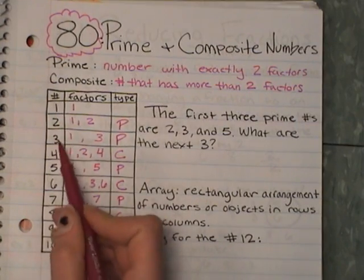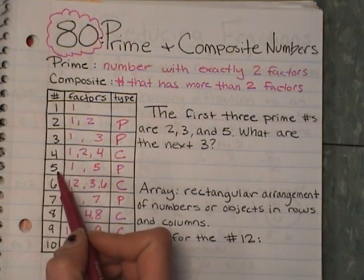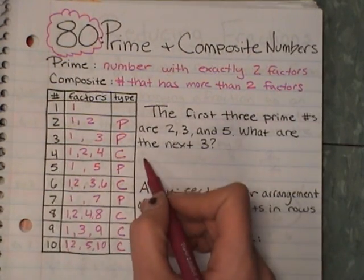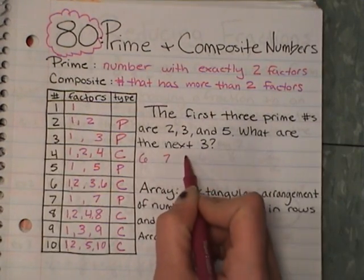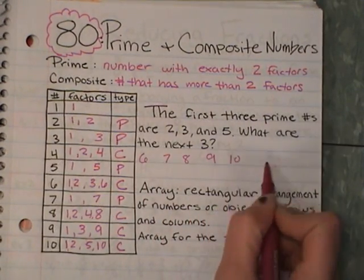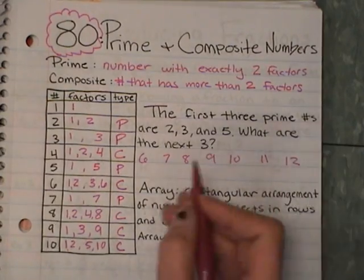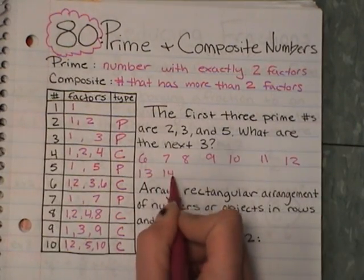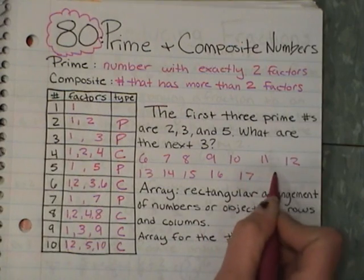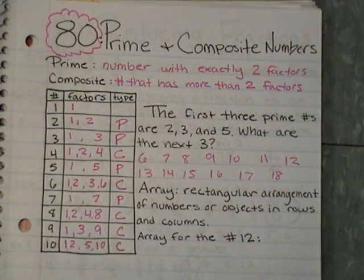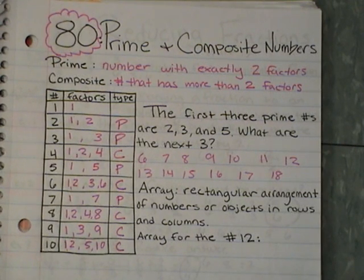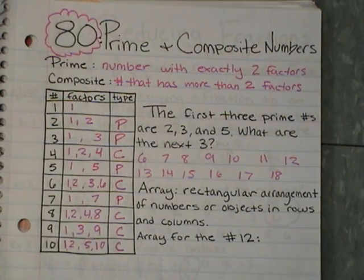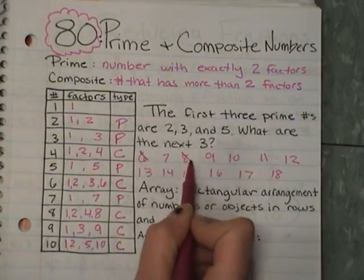We know 2, 3, 5. What are the next 3? So let's go: 5, 6, 7, 8, 9, 10, 11, 12, 13, 14, 15, 16, 17, 18. I can go through and say, if it's even, it's going to have more than 2 factors — it's not going to be prime. I'm going to go ahead and cross out all my even numbers.